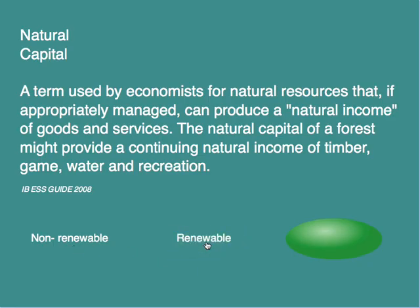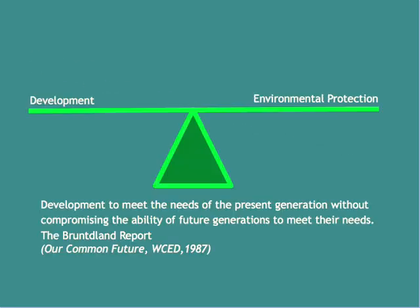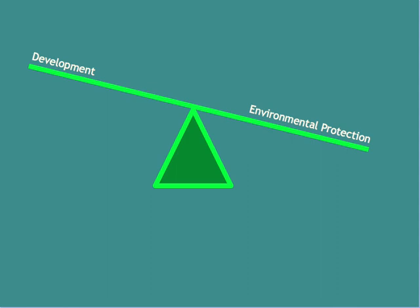Another definition is sustainable development: development to meet the needs of the present generation without compromising the ability of future generations to meet their needs — the classic balancing act of having some development and having some environmental protection.